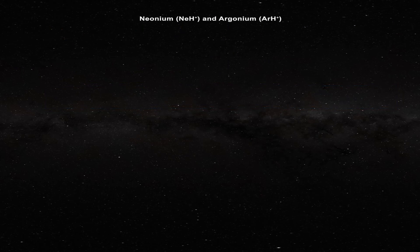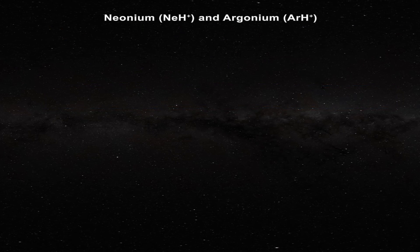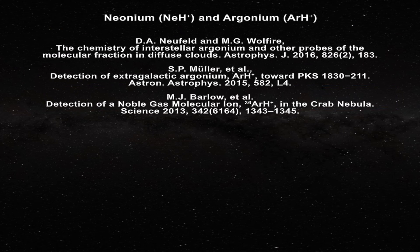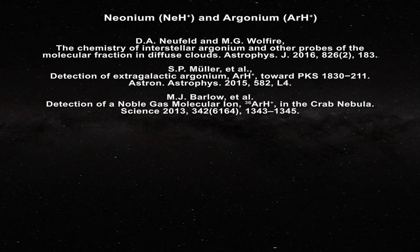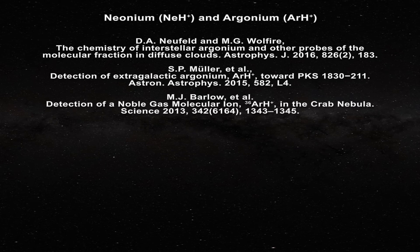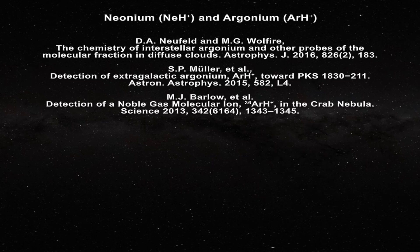As a point of interest, however, hydride cations of both neon and argon, namely neonium and argonium, are known to exist in the laboratory, and argonium has been found in the astrophysical setting, although none of these compounds have ever been seen on the Sun.